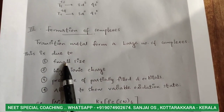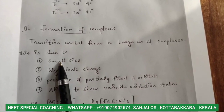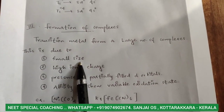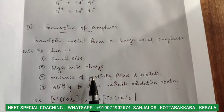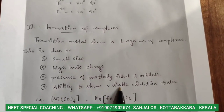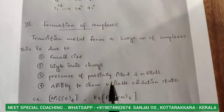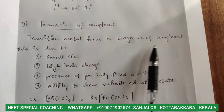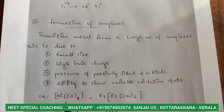What is the reason transition metals form a large number of complex compounds? Four key properties: small size, high ionic charge, partially filled d-orbitals, and variable oxidation state. These four properties allow transition metals to form a large number of complex compounds.